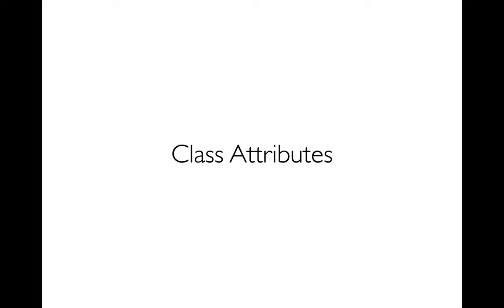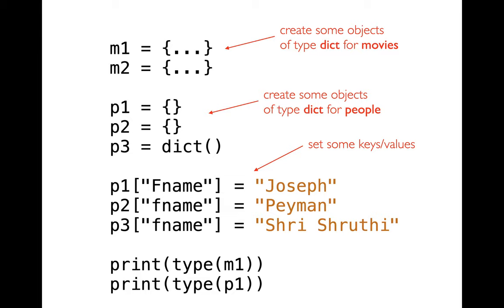The first thing I want to talk about is classes, and an analogy between classes and class objects compared to dictionaries. With dictionaries, you've seen that you can put a lot of different kinds of information in there. For example, I could create a dictionary to represent a movie object — I could have a bunch of different movies, all as dictionaries — with keys and values giving me things like the movie title and the year the movie was released.